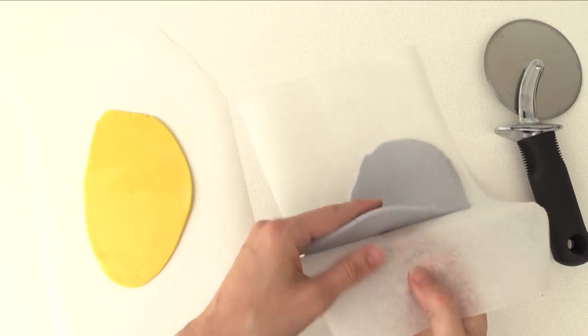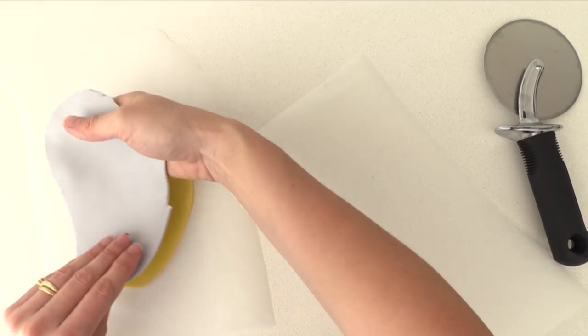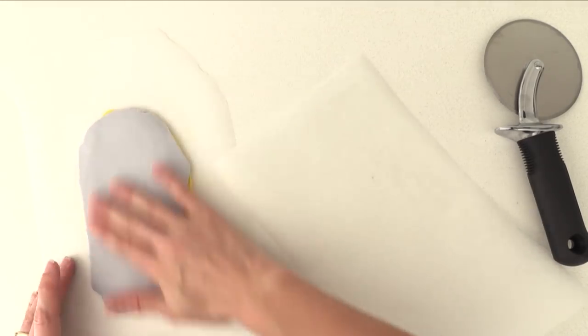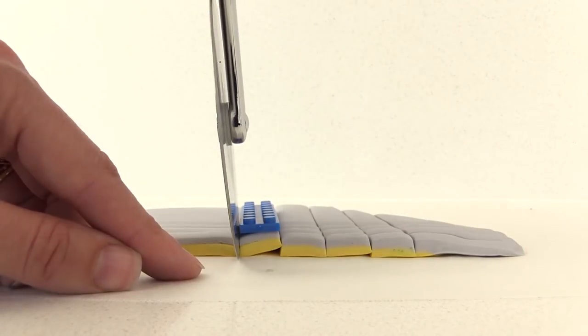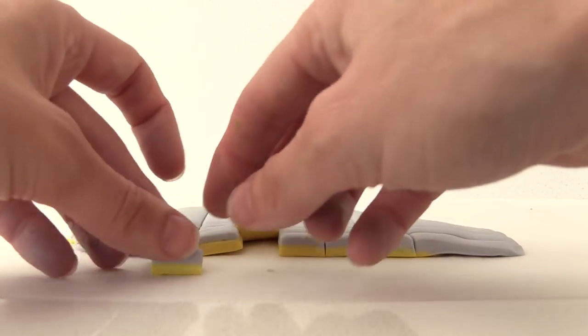Roll out some yellow and grey fondant. Rub a little water on the yellow and add the grey to the top. Slice it into little pieces the size of a 2x1 and these will be the lights for around the top of the building.